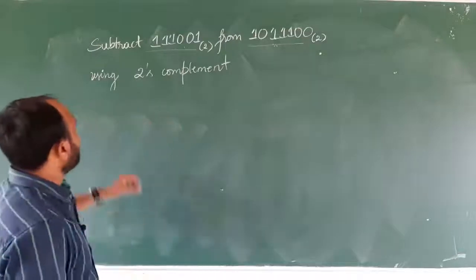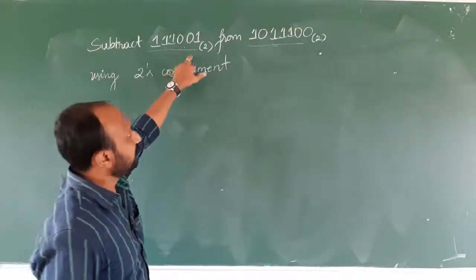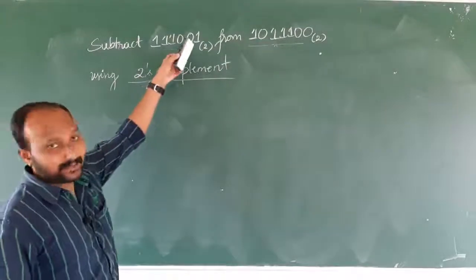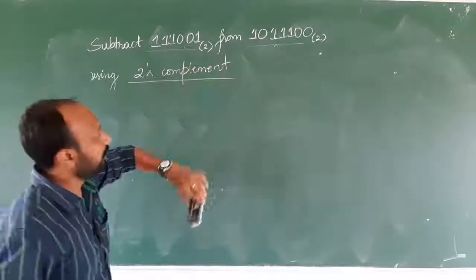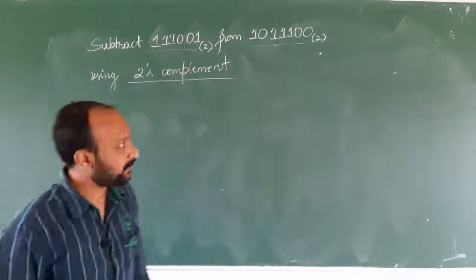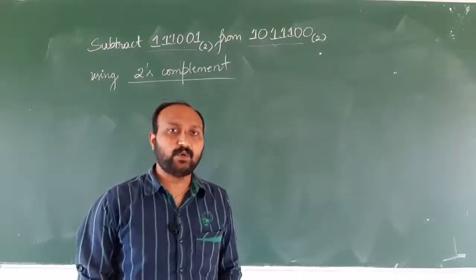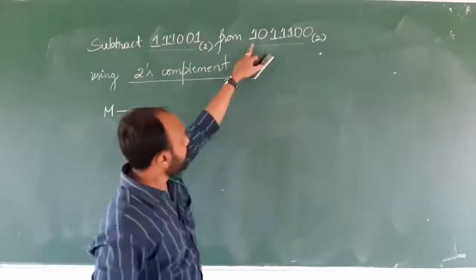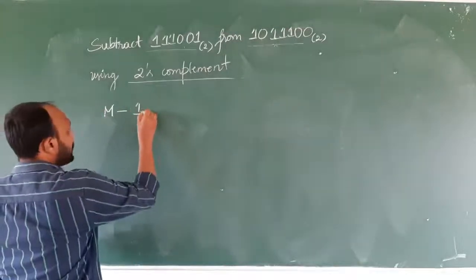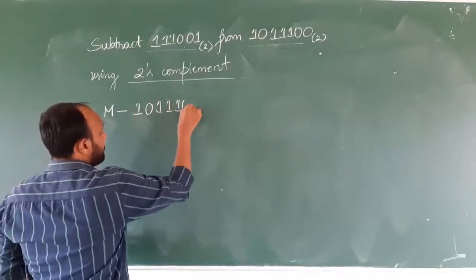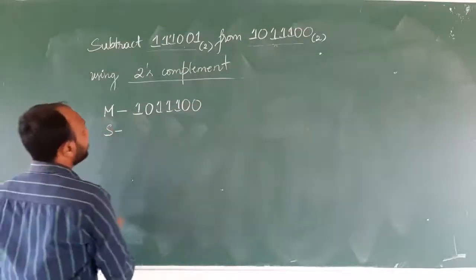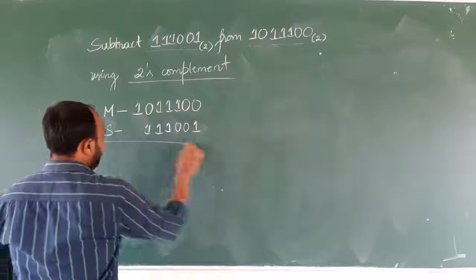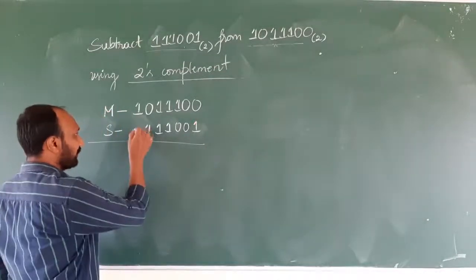Let us take up the second problem. Subtract 111001 from 101100 using two's complement. Please notice that these values are already given in binary, so you need not convert them. You need to decide which sequence of bits is the minuend and which is the subtrahend. The minuend is 101100 and the subtrahend is 111001. Please notice that in the subtrahend, one bit is missing, so let us fill this bit with 0, making it 0111001.